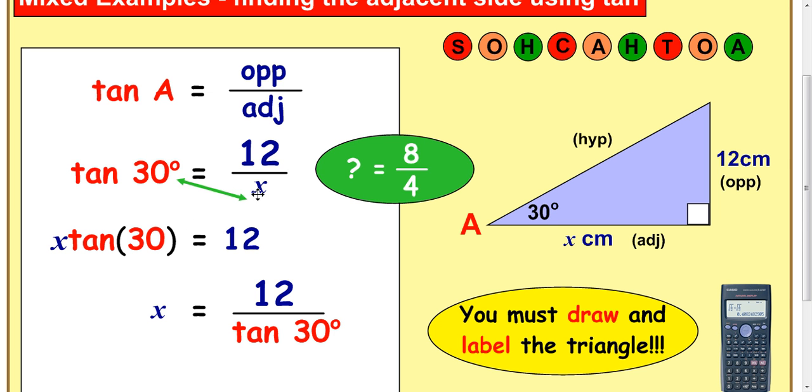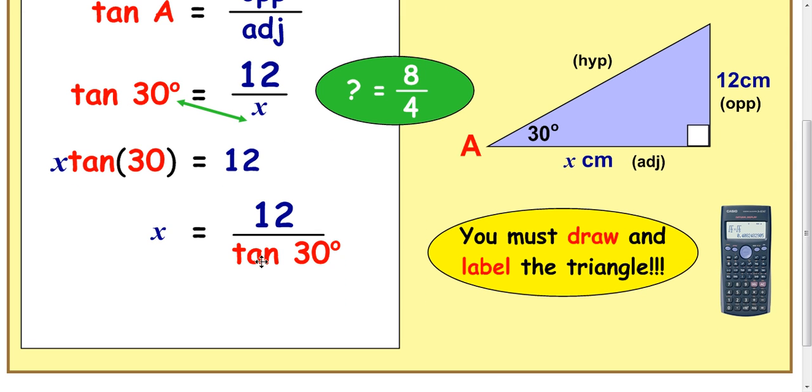This is more mathematical here, multiplying up by the x, and then dividing down by the tan 30. A quick way is to just swap the two. If you then just type this into your calculator, 12 divided by tan 30, you'll get an answer of 20.8 cm.